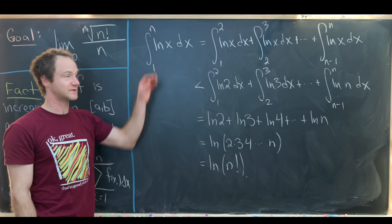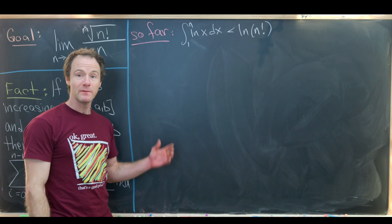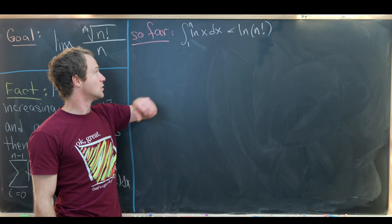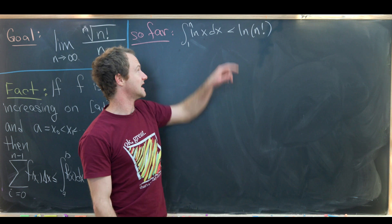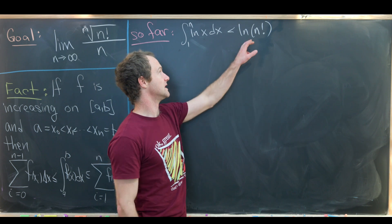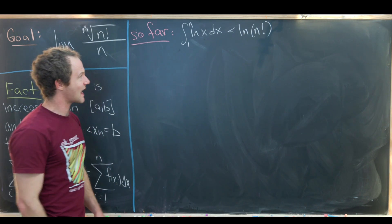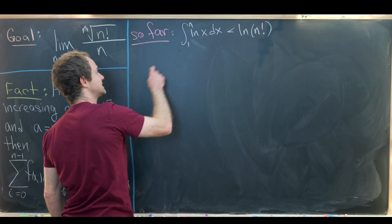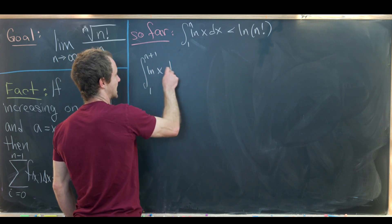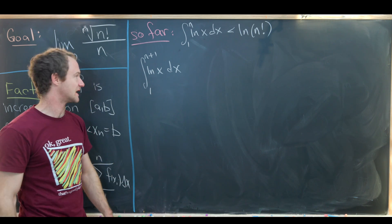So we've derived the inequality: the integral from 1 to n of ln(x) dx is less than ln(n!). Now we want to derive a similar inequality that puts something on the other side of ln(n!). We'll start with the integral from 1 to n+1 of ln(x) dx, which is in fact larger than ln(n!), and use the same kind of strategy — splitting into subintervals.